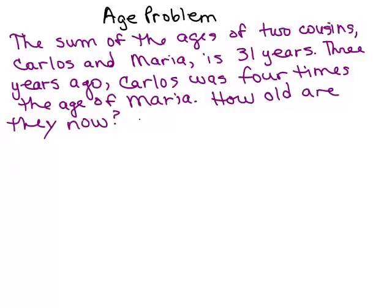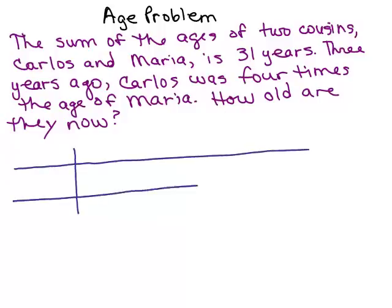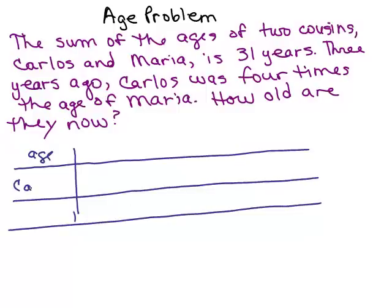All right, so all we know is that their ages add up to 31 years. So let's draw a little chart to keep track of their ages now and the other time period which happens to be three years ago. We're talking about ages of Carlos and Maria and how old they are now and three years ago.